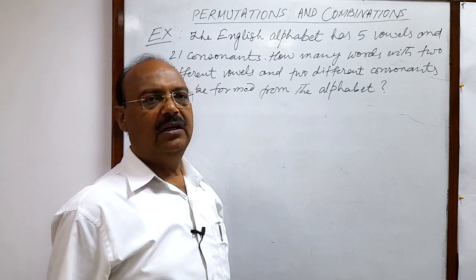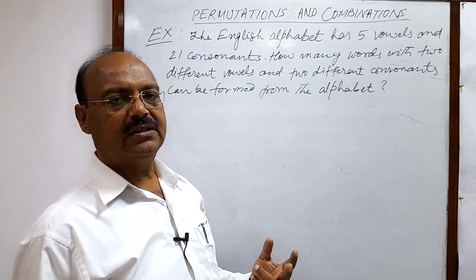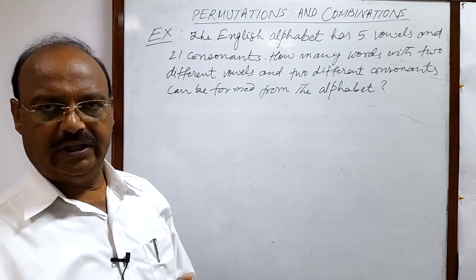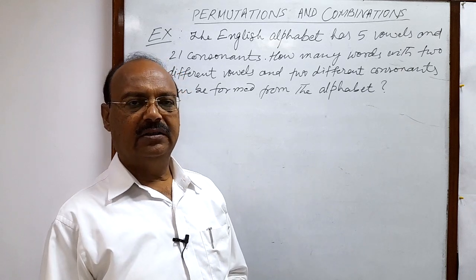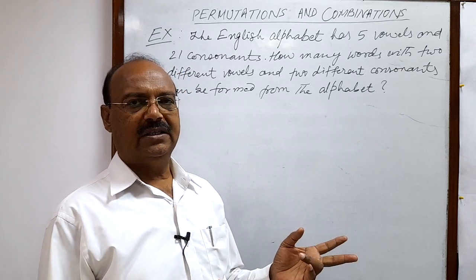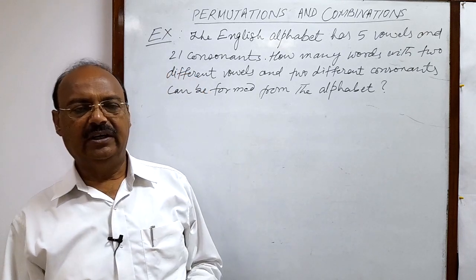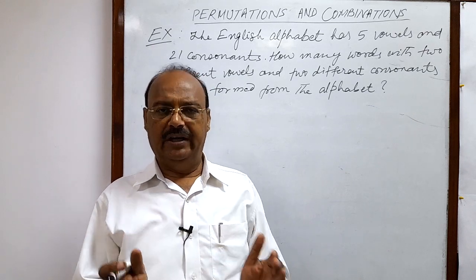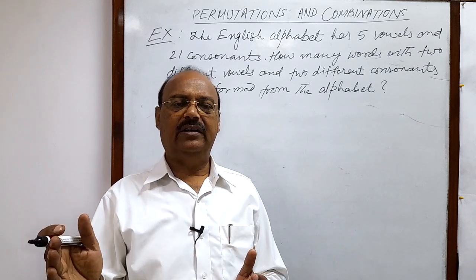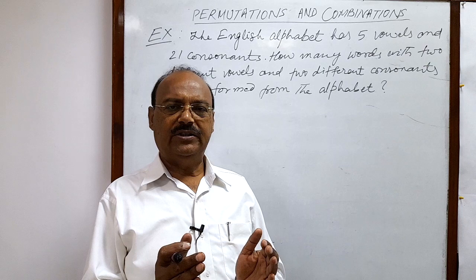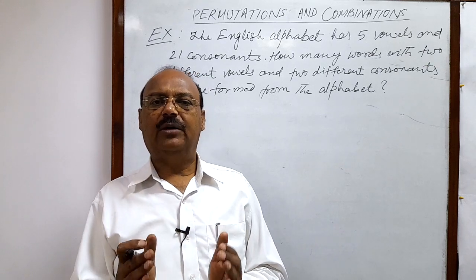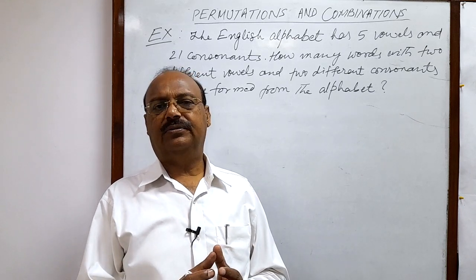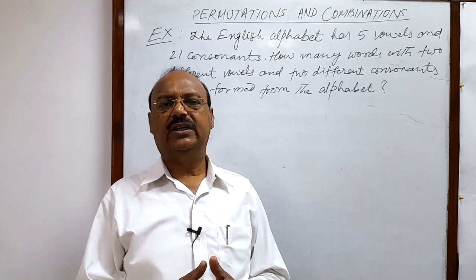First of all, we will make a selection of 2 vowels from 5 and 2 consonants from 21, and we will multiply them together because we have to make words with the help of 2 vowels and 2 consonants. By the fundamental principle of counting, if one part of a job can be done in m ways and another in n ways, then the entire job can be done in m × n ways. So the number of ways of selecting vowels multiplied by the number of ways of selecting consonants gives the total number of selections of 2 vowels and 2 consonants.